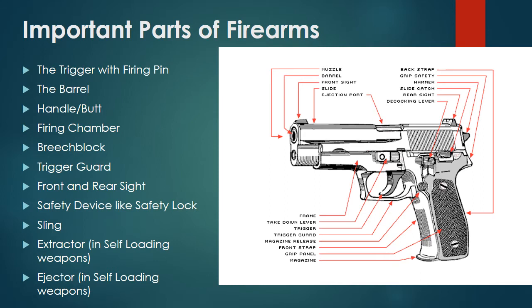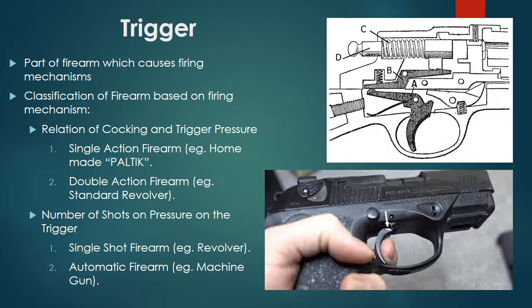In the diagram there is a handgun with visible parts for review. Important parts of a firearm include the trigger with firing pin, barrel, handle or butt, firing chamber, breech block, trigger guard, front and rear sight, safety device or safety lock, sling, extractor in self-loading weapons, and ejector in self-loading weapons. The trigger is the part that causes the firing mechanism.